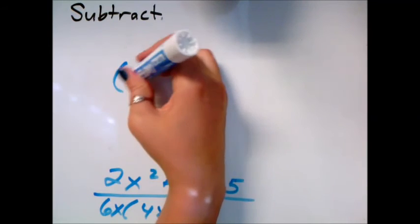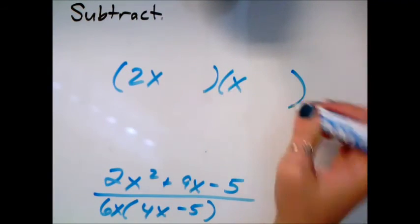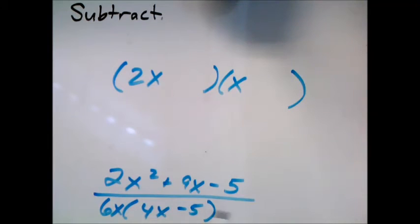So I know this will be 2x and x, as the only way to multiply to 2x squared. And I need factors of negative 10, if I'm thinking ac here, that add to positive 9.